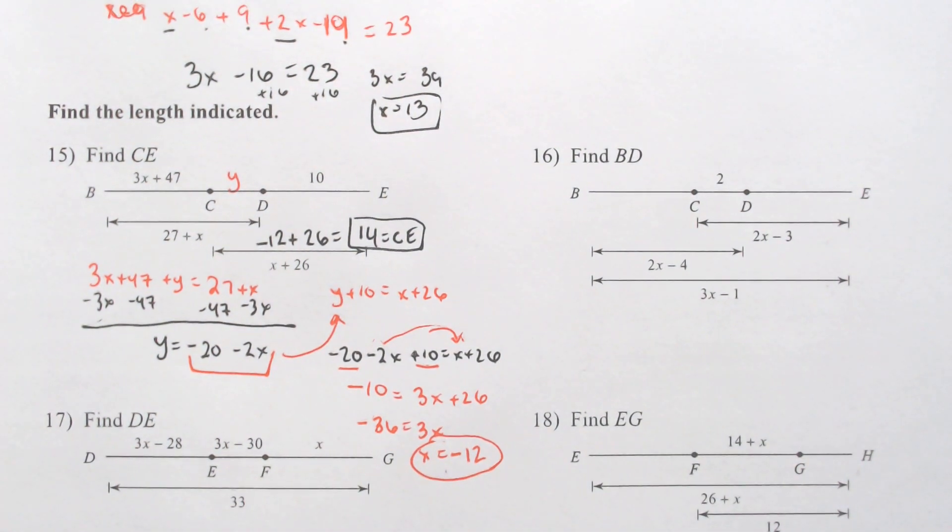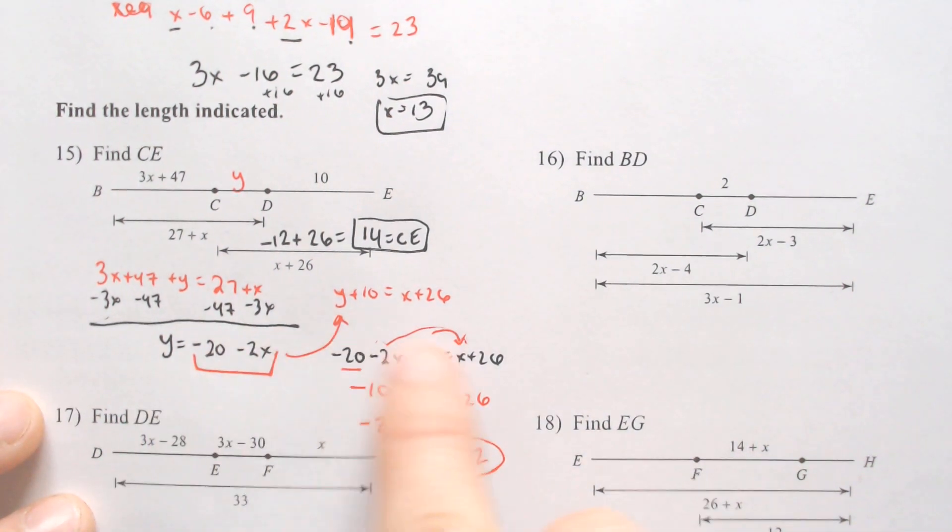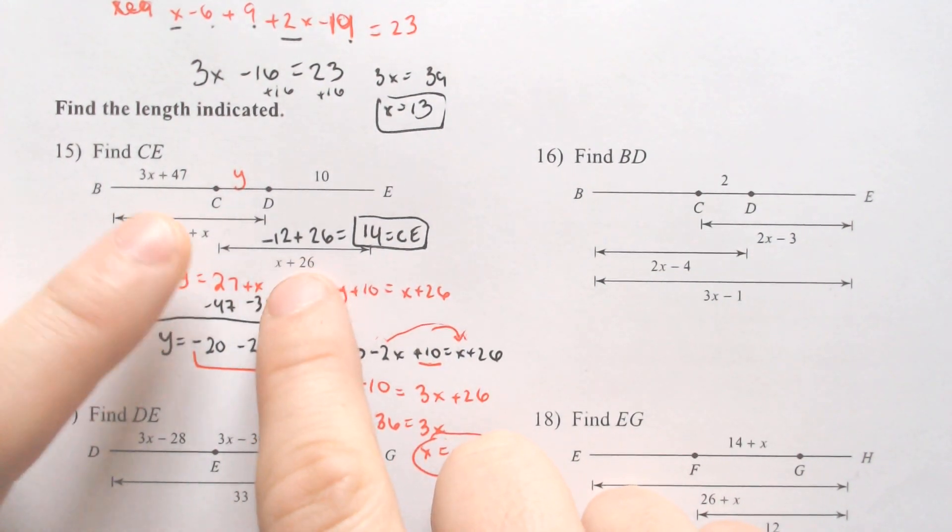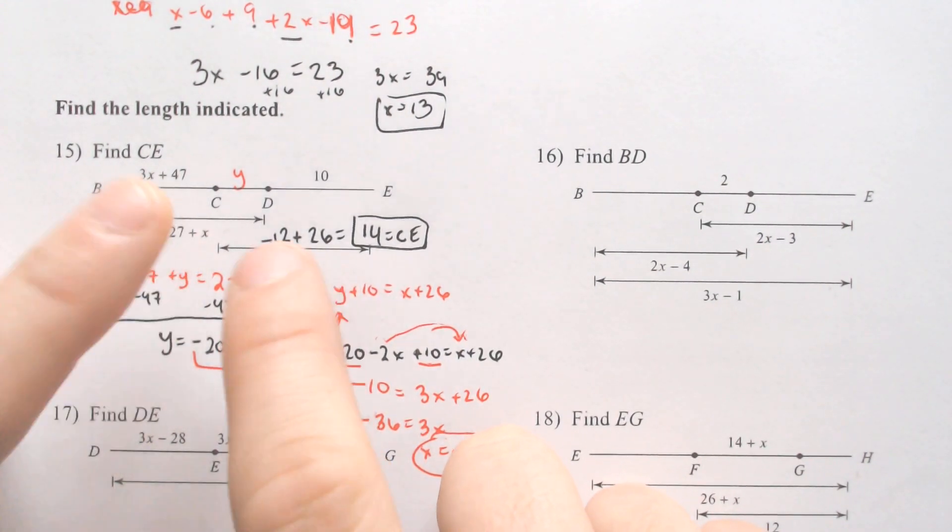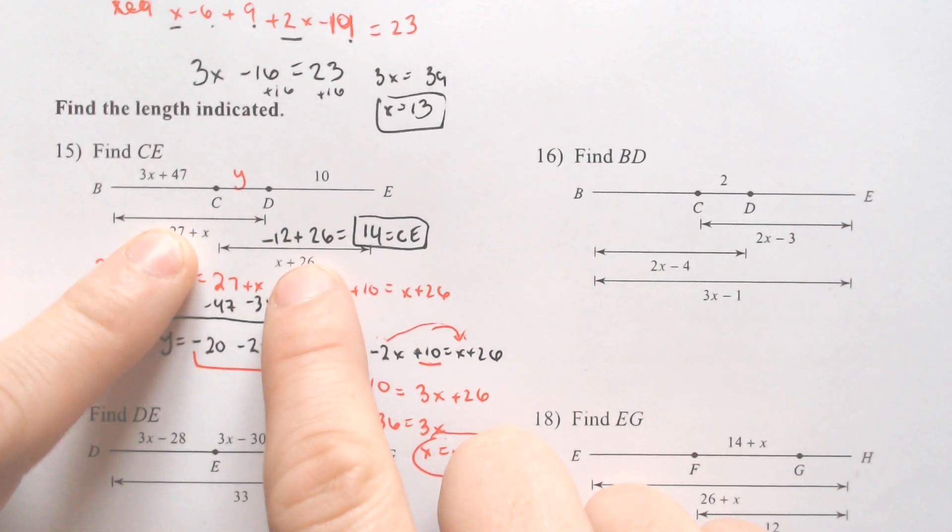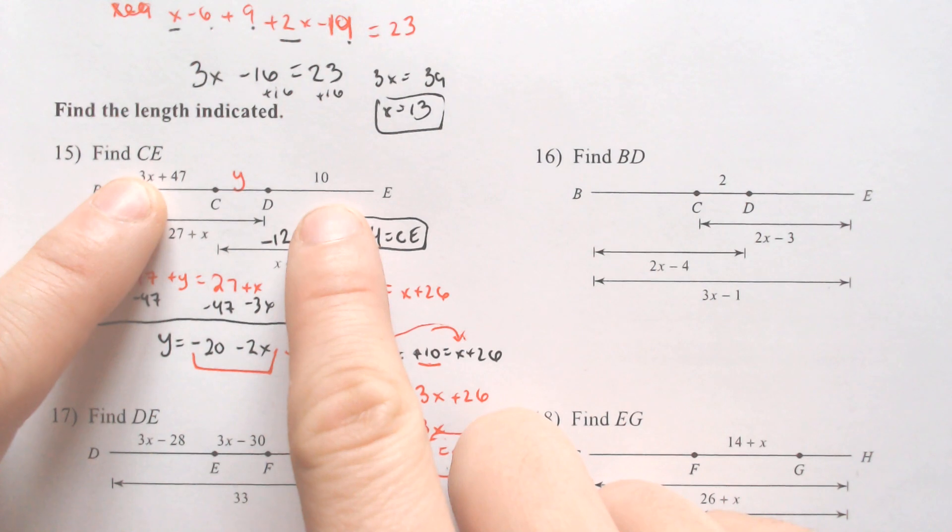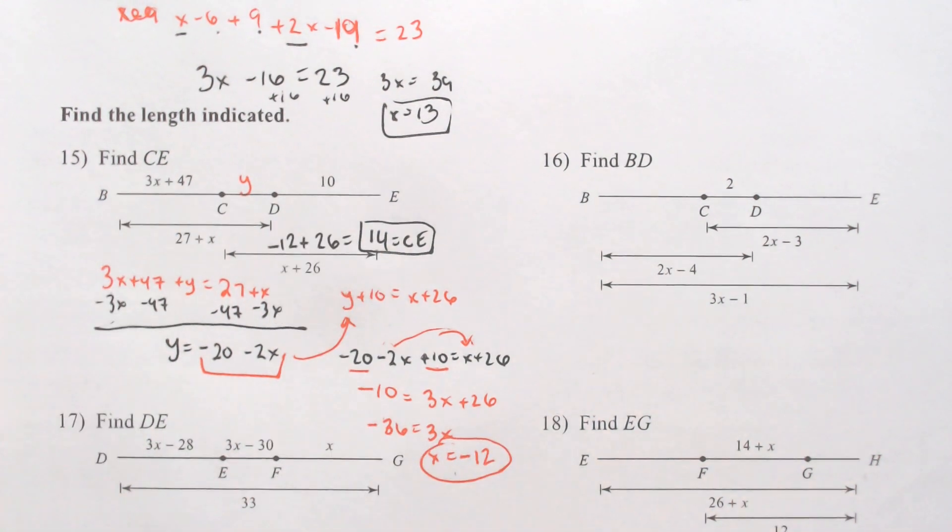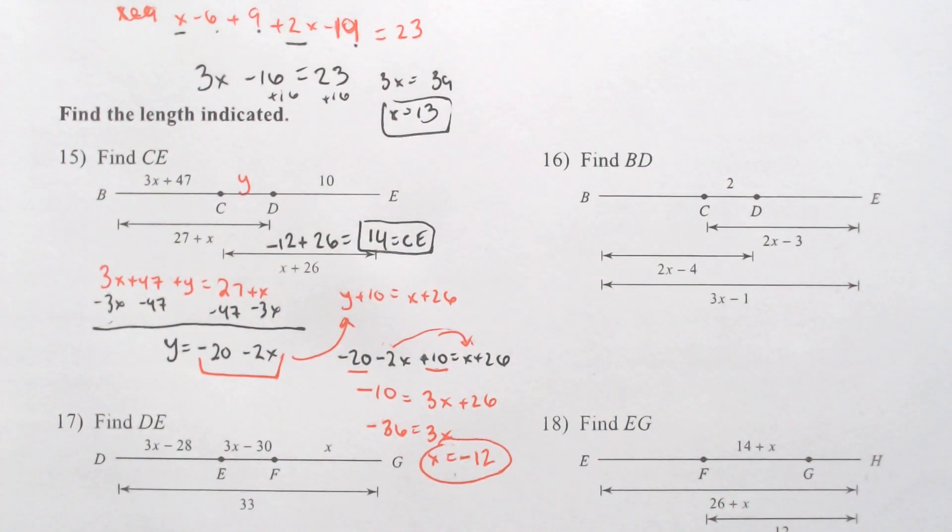Now there are some other ways to do that. That, to me, is one of the bigger ones that I find to be useful is to do a substitution. But you can find the difference between these two because the difference is the overlap. And then after you find the difference between those two, you should be able to equal it to the 3X plus 47 and the 10. Your teacher might show you a different method for that. That one's a hard one.